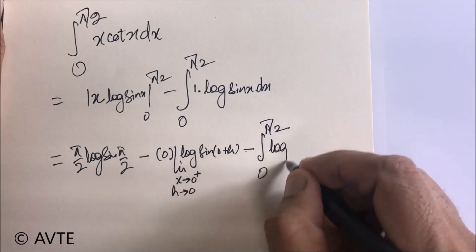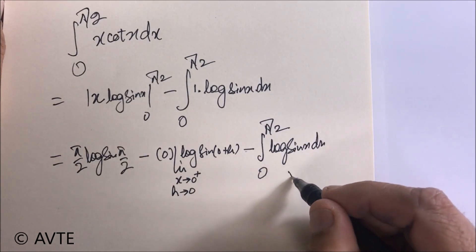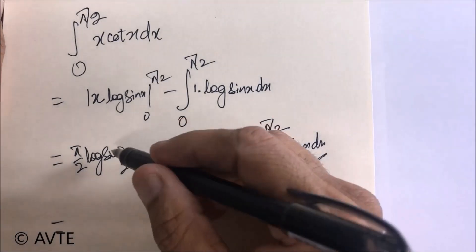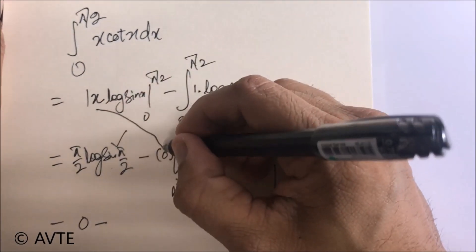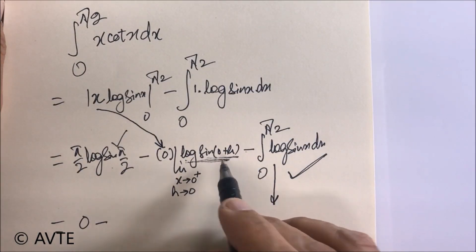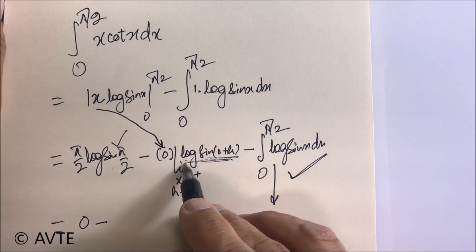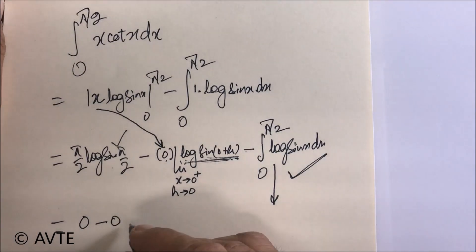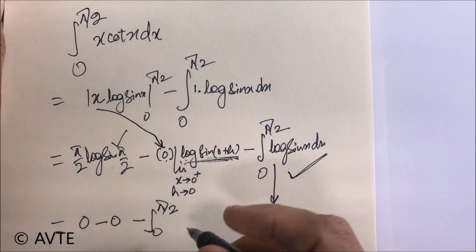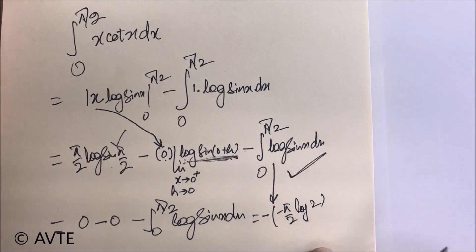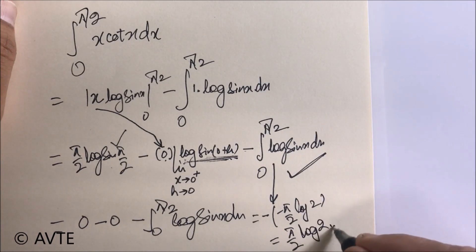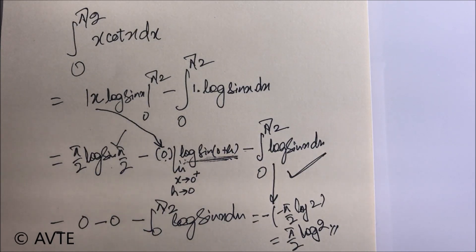This gives minus ∫₀^(π/2) log(sin x)dx. We put the upper limit π/2: sin(π/2) = 1 and log(1) = 0, so that part is zero. For the lower limit, we approach 0⁺ (as h→0), and this term also goes to zero — so the boundary terms vanish. We are left with −∫₀^(π/2) log(sin x)dx, giving the answer −(−π/2 · log 2) = π/2 · log 2. This is a big family of questions and the head of the family is ∫₀^(π/2) log(sin x)dx. Keep practicing, subscribe the channel, and tell others. Thank you!